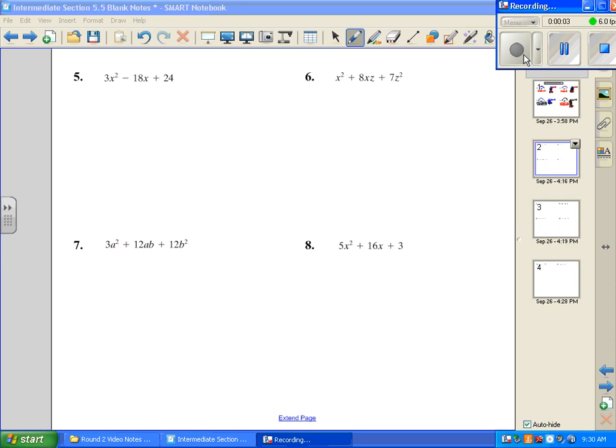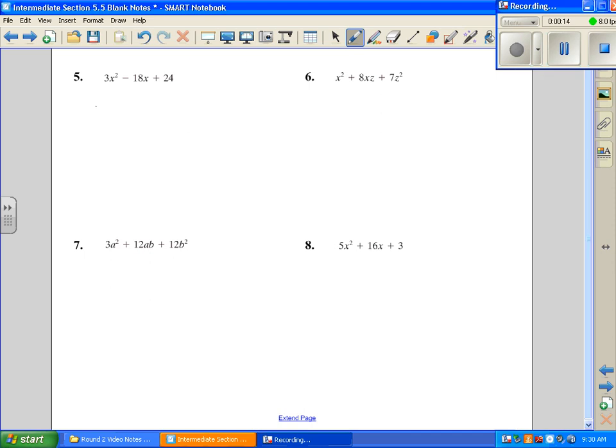We are continuing to factor. First thing we want to do in number 5, as usual, is check for a GCF. And if we notice that a 3 can come out of each one of these terms. So the first thing we want to do is factor out a 3, so I'm left with x squared minus 6x plus 8.